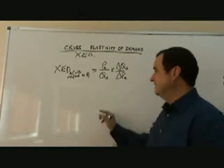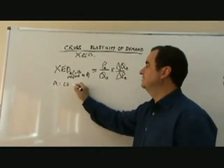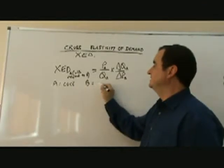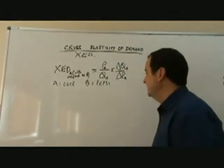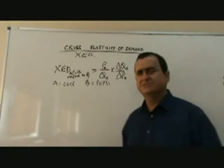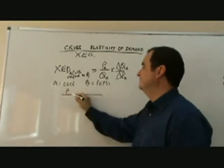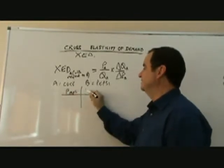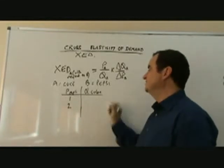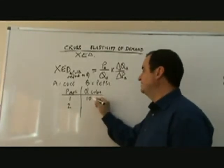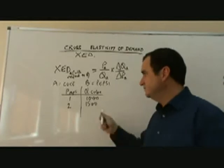Okay. Let's work with an example. Let's imagine that A is Coke, Coca-Cola. B is Pepsi. Now, we're going to measure what happens to the demand for Coke when Pepsi changes price. And let's imagine that this was done and we found some research and we found, let's keep it simple, we found that when the price of Pepsi went from one to two, the quantity of Coke bought went from a thousand to one thousand five hundred.